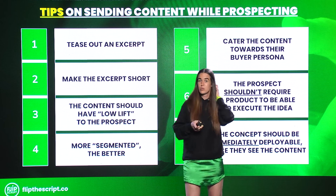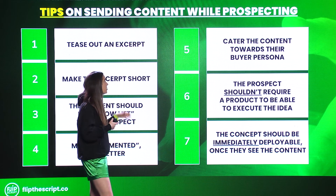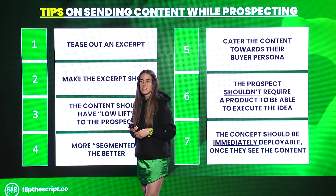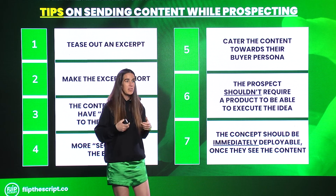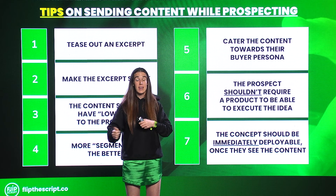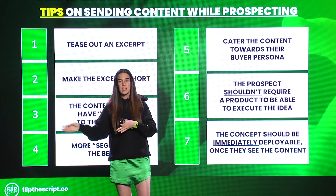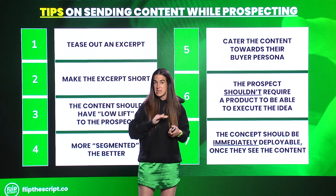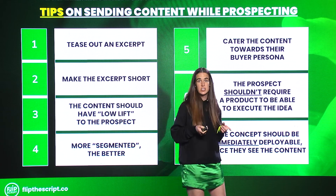Number five: cater the content towards the buyer persona. That will help you avoid product-centric content and select something valuable to that specific buyer persona. The prospect shouldn't require a piece of tech to deploy the content. A great example: on Food Network, when presenting a recipe they'll give an option of a pre-packed ingredient packet or the longhand version with measured ingredients. You always want to give your prospect content they can deploy that does not require a piece of tech. The concept of the content should also be immediately deployable.